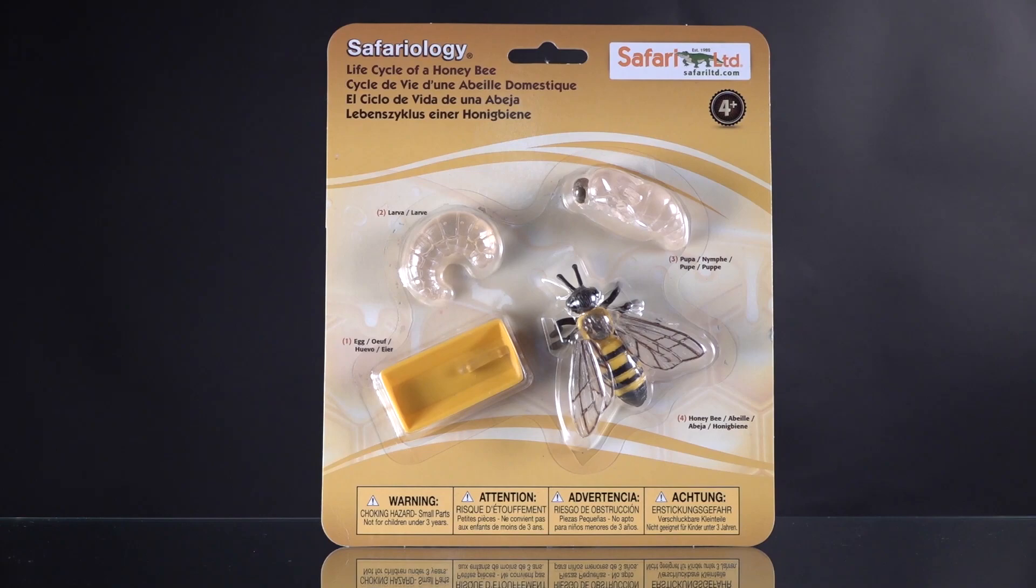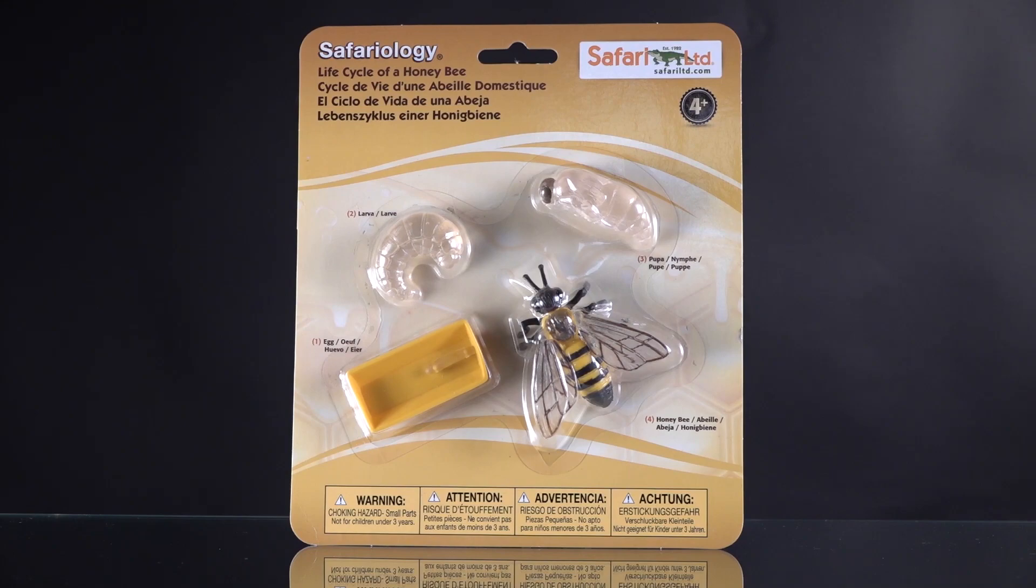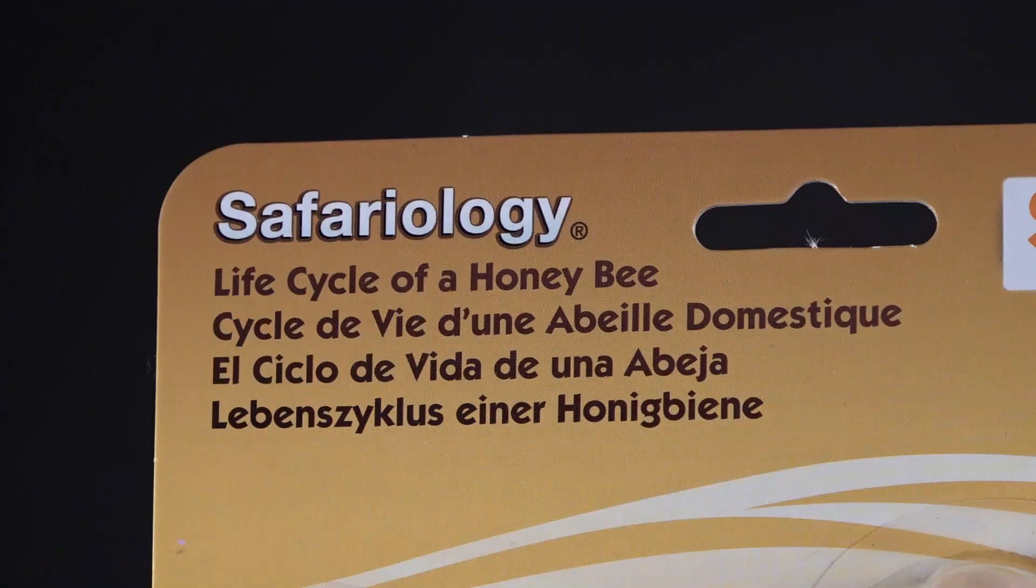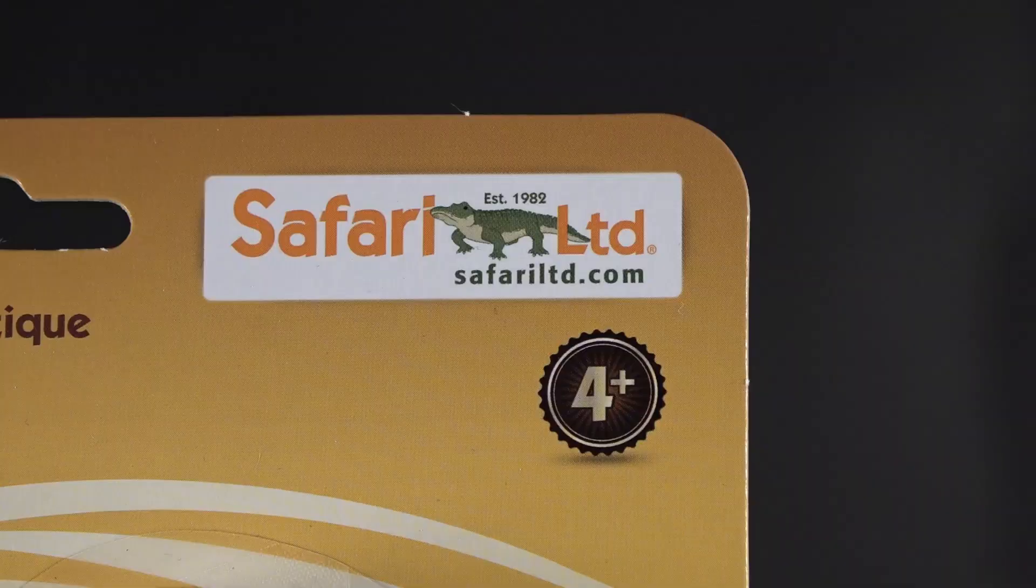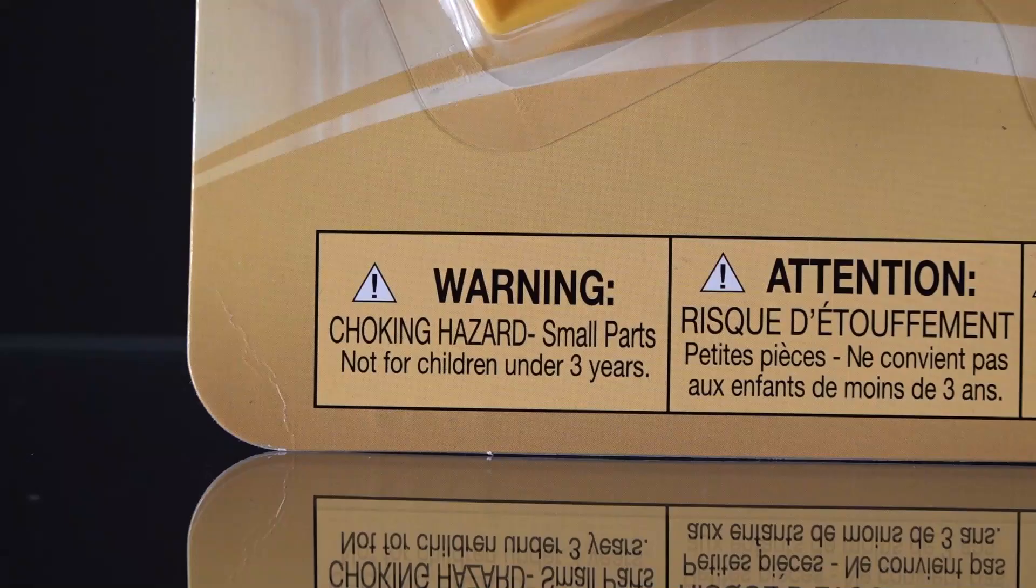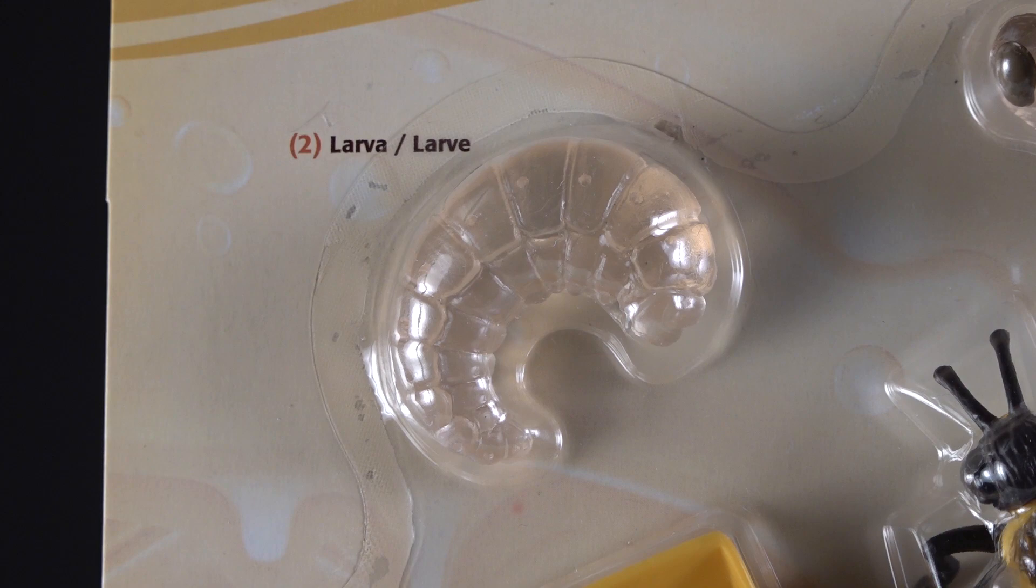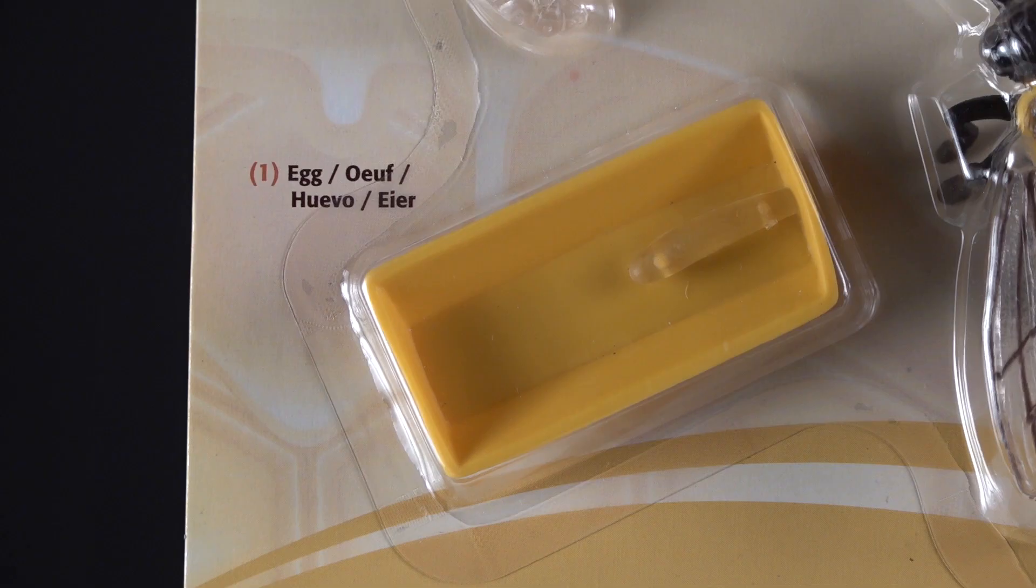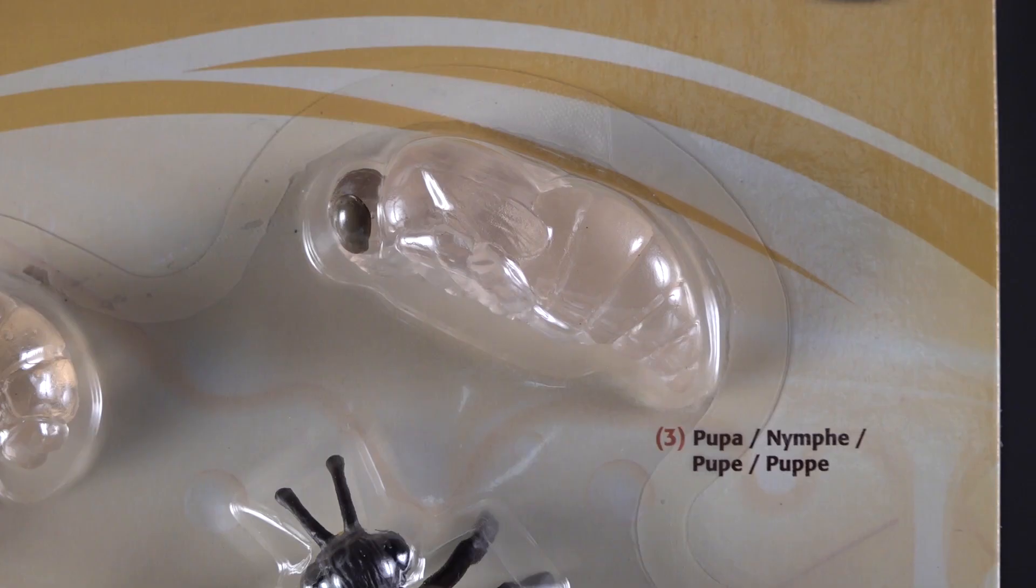Okay, so today we're going to continue this fun subject which is toys that teach, and this is the life cycle of a honeybee. Again, it's from Safariology, one of my favorite companies that's making toys. I bought this from Amazon at full price and this is for ages 4 and up. The company again, Safari Limited, and it's a choking hazard for small children. You're gonna want to supervise them. I think four years and older is okay, but you still want to be with your child.